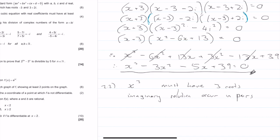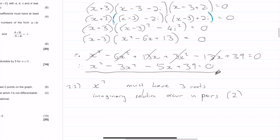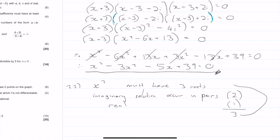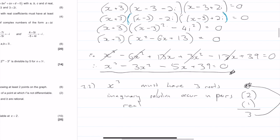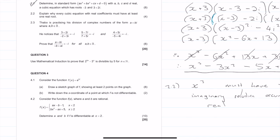So that means I have two solutions from my imaginary part. If I had another imaginary part, I would have another two solutions, which means four solutions in total for something that only has three roots — so that can't be true. My last solution must therefore be a real root, because real roots occur singularly. So my real root gives one solution, giving a total of three roots. We get four marks for that.